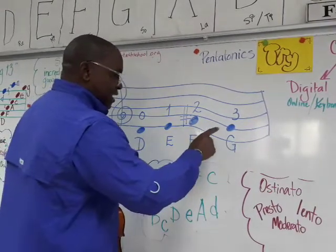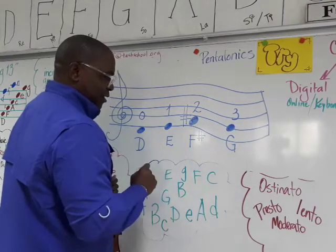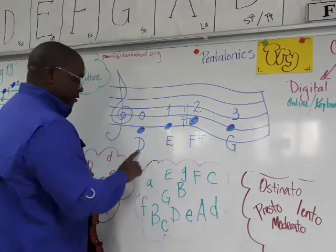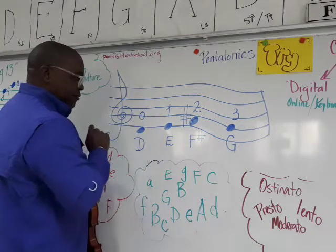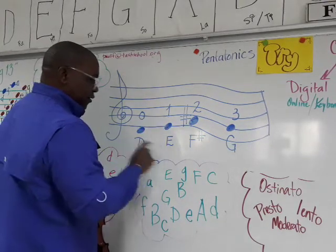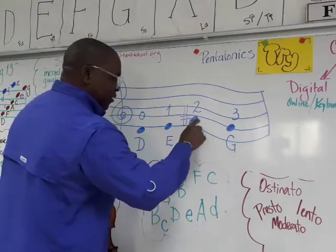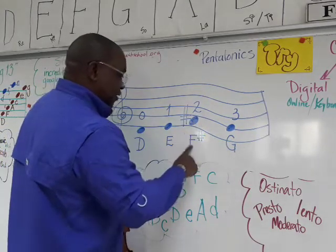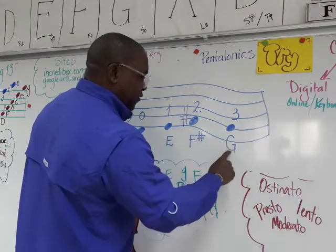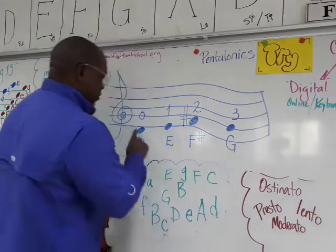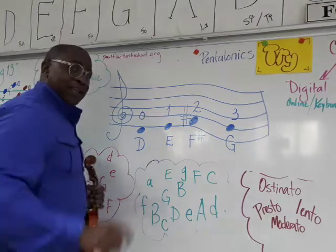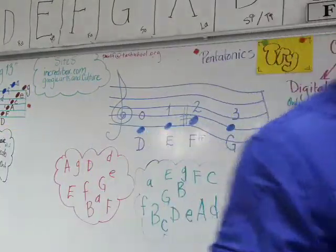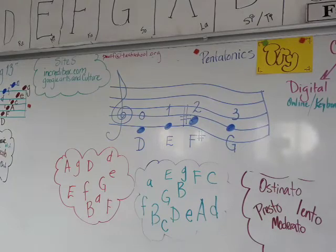So we have four notes on the D string: open zero D, first finger E, second finger F-sharp on the bottom space, and third finger G on the second line — one, two, three, four. Now let's go to the A string notes.